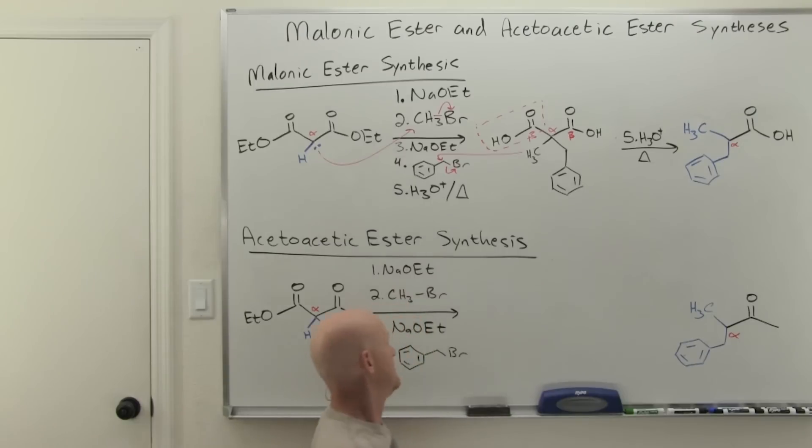And then finally, this one, same thing. You've got to finish it off with H3O plus and heat. And so by the time you've done the first four steps, you've replaced one of these hydrogens first with the methyl group, and then you're replacing the other hydrogen of the alpha hydrogens with this lovely benzyl group.